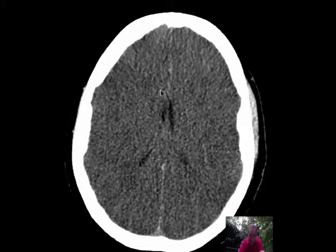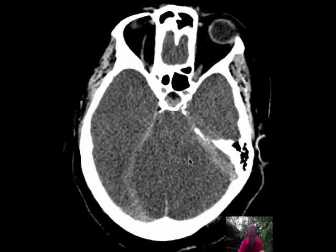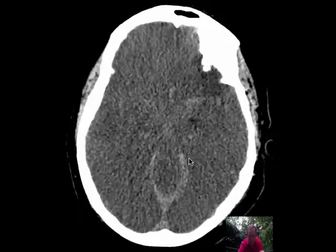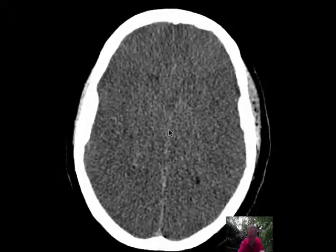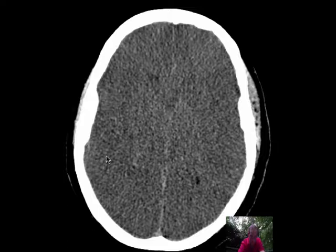That edema also produced mass effect compressing the ventricular system, including the lateral ventricles and the fourth ventricle. I don't really see anything of a third ventricle in between the two. Gray-white matter differentiation is nearly completely lost. You can see some remnant, I believe, of cortical margin.